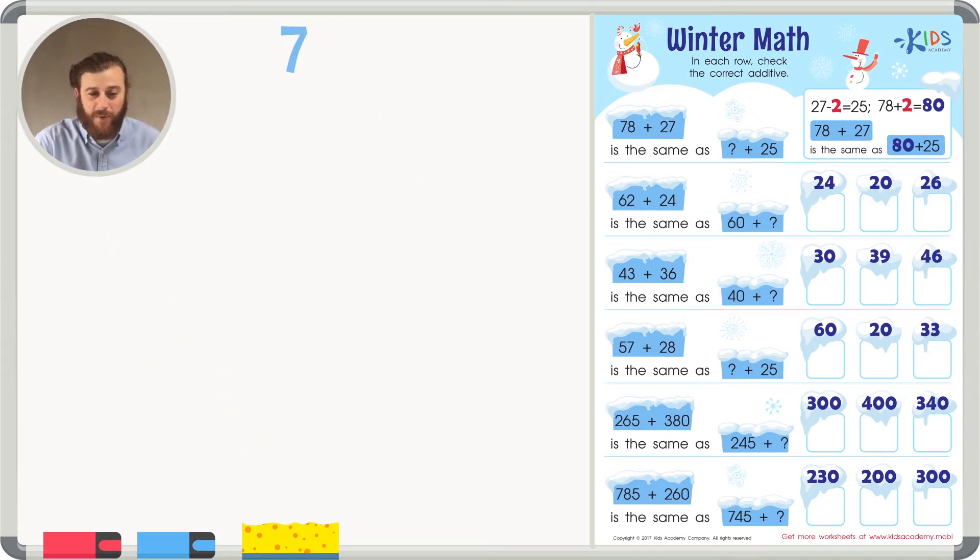Let's check out the example 78 plus 27. This question wants to know 78 plus 27 is the same as blank plus 25. I can see that the 27 is turning into 25. So the question you have to ask yourself is how did I turn 27 into 25? Did I add something or did I take something away? Well, 27 is more than 25, so we probably took some numbers away.